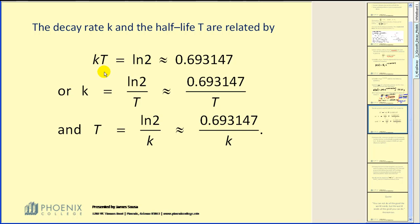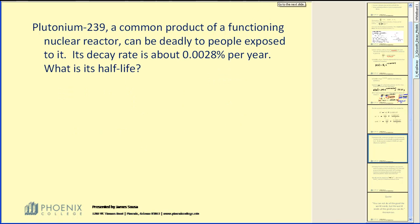So that allows us to find either the decay rate or the half-life rather quickly. If I want to find the decay rate, I could just take natural log two divided by the half-life. If I want to find the half-life, that's equal to natural log two divided by the decay rate. Let's take advantage of that formula.